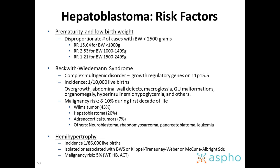Beckwith-Wiedemann syndrome is very rare, with an incidence of 1 in 10,000 live births. It presents with overgrowth, abdominal wall defects, macroglossia, GU malformations, organomegaly, hyperinsulinemia, and others. The malignancy risk is around 8% to 10% during the first decade of life. The most common is Wilms tumor, followed by hepatoblastoma and adrenocortical tumors.